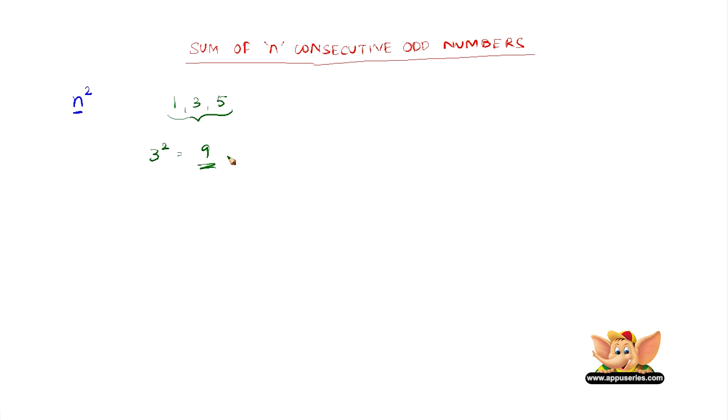Let us try another problem, a little lengthier one. Let us find the sum of first six odd numbers, so that becomes 1, 3, 5, 7, 9, 11.